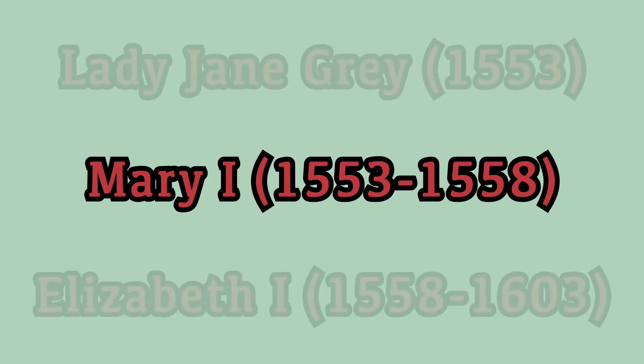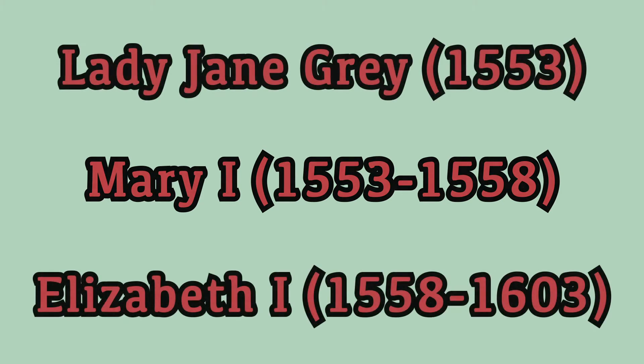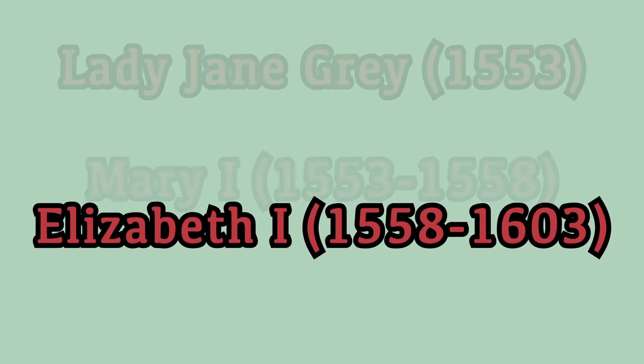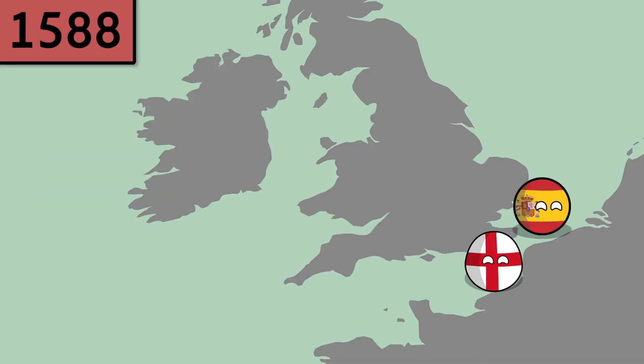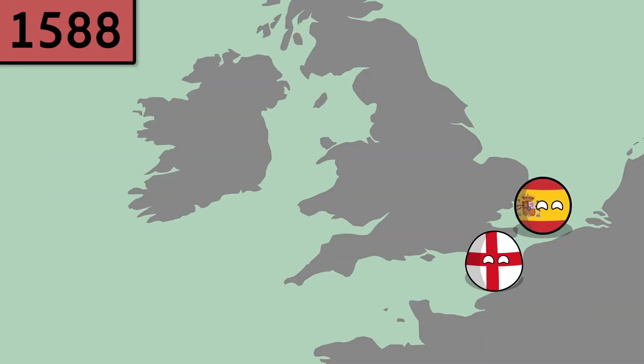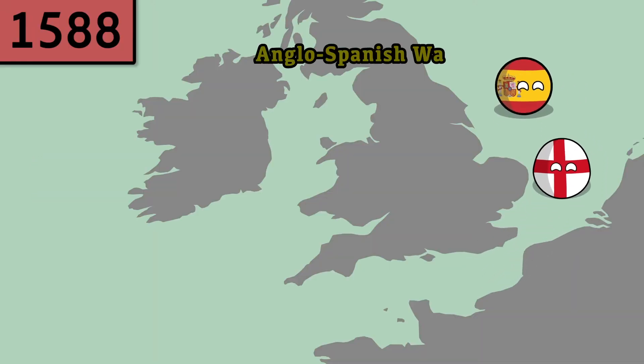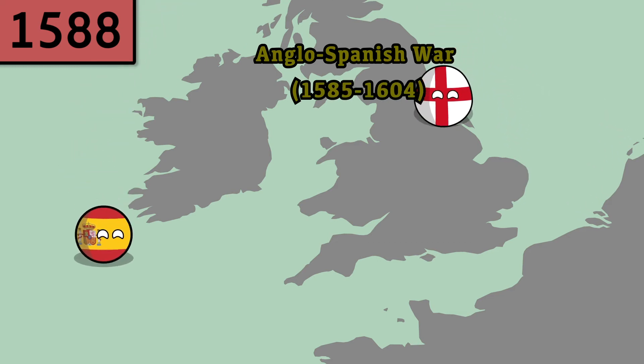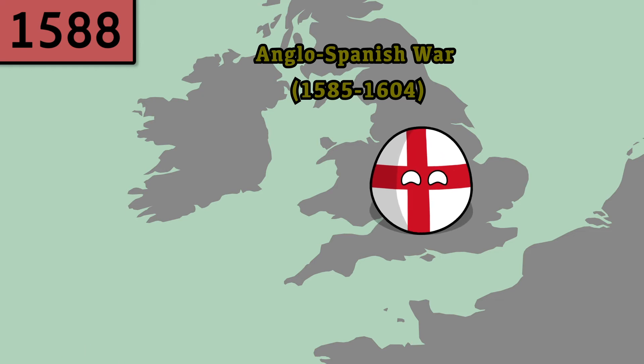The Tudor era was also the first in which women ruled the country, with the period seeing the first ruling Queen of England in the shape of Mary I, and depending on your perspective, three female monarchs. Under probably the most famous of these queens, Elizabeth I, we saw another famous event in English history in the shape of the defeating of the Spanish Armada in 1588, which of course is of pretty huge significance, as any attempted invasion of the British Isles has been.